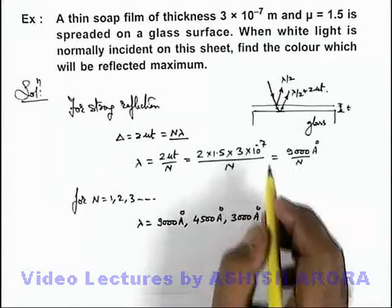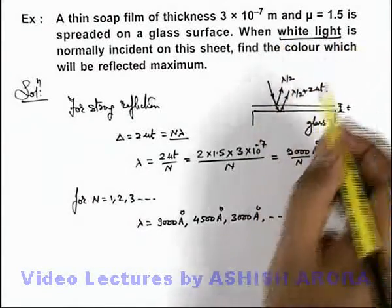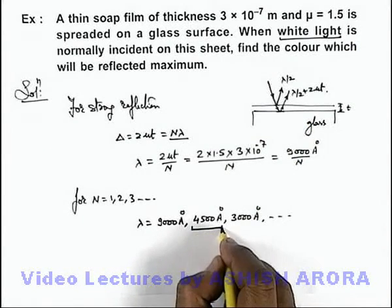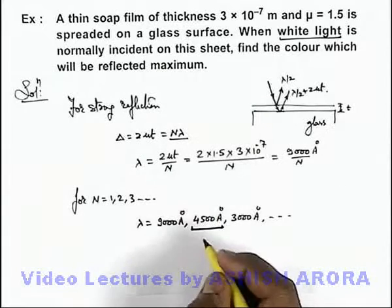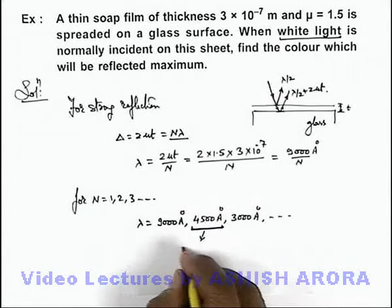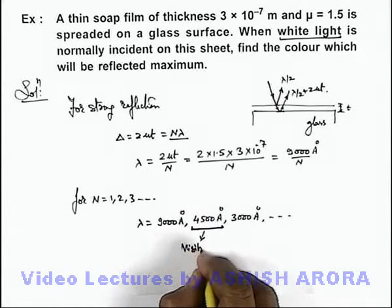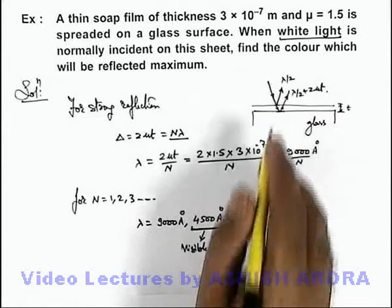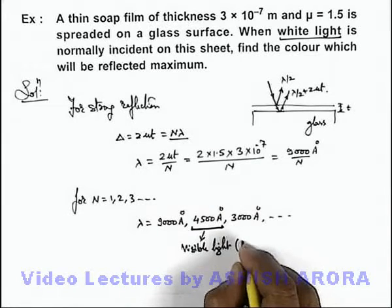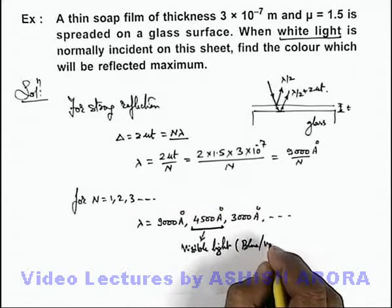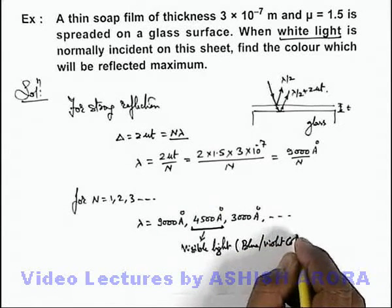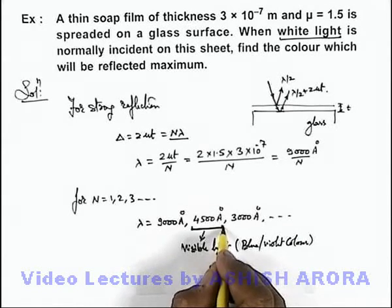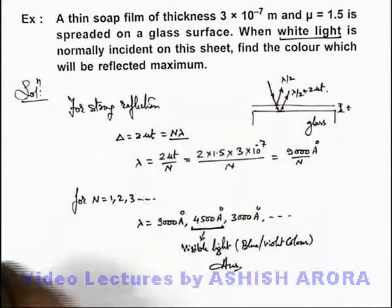We are given that white light is incident on it. So here only 4500 angstrom is the wavelength which is in the range of visible light. This is the only visible wavelength producing constructive interference in reflected light, which corresponds to blue or violet light. So that will be the answer to this problem—this is the color which is reflected maximum.